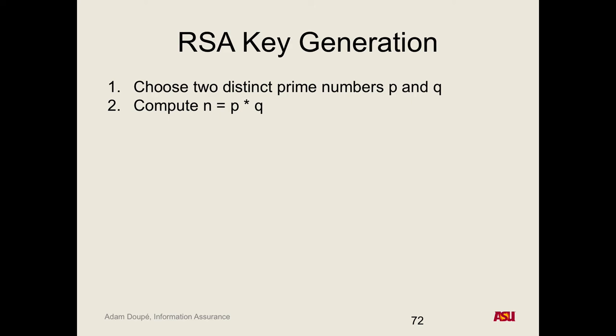The idea is that if you're given N, you should not be able to derive P and Q — it should be computationally difficult. As part of the public key, you give out N to anybody, because there's no way to break it down into P and Q. RSA actually relies on two difficult things: factoring large numbers, and the discrete logarithm problem with modular exponentiation.